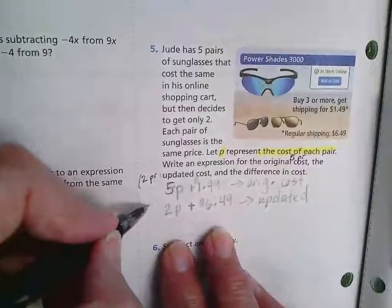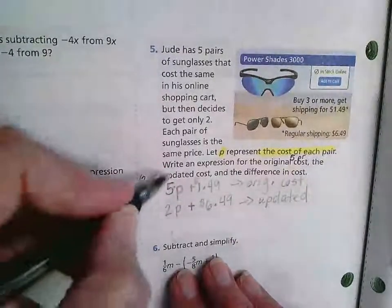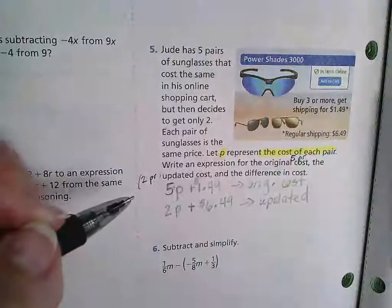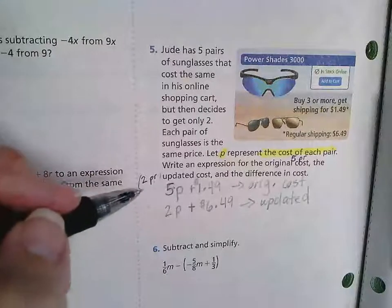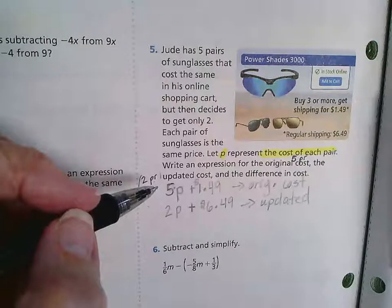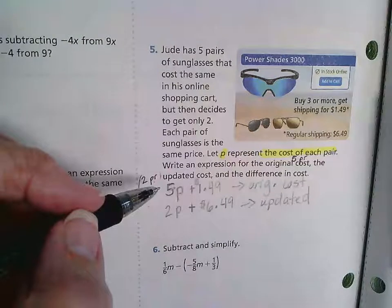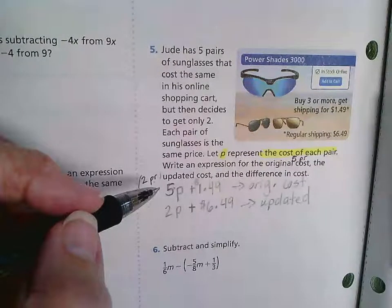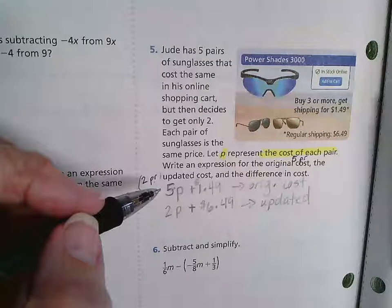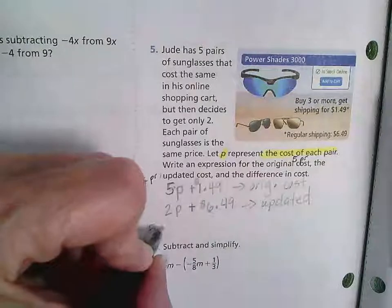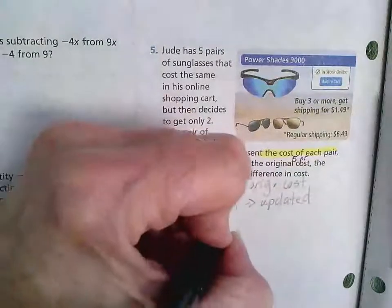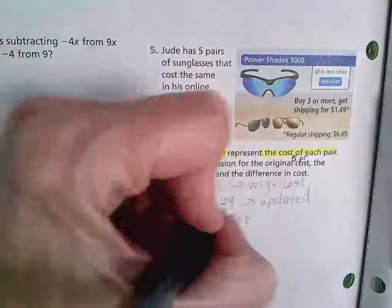Now you might be tempted to go ahead and just put a little subtraction sign out here and draw a line and subtract. But you'll notice here you're going to get a negative. Either way, you're going to get a negative because we're going to take the difference in the cost. So let's see, let's do it both ways. So 5p plus $1.49 minus 2p plus $6.49.